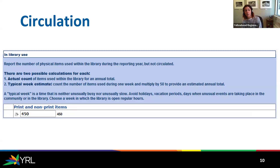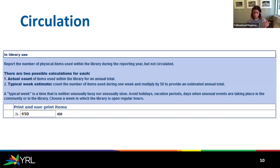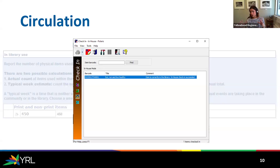Moving along, we have in-library use — that's in-house use. There are two ways of reporting this: an actual count or a typical week estimate. For the week estimate, you would have taken a week throughout the year where you gathered up the items and tallied them up. If you're wondering whether you do an actual count — this is the check-in workform selected on the in-house mode. So if there is a procedure at your library where things left out are gathered, taken to the desk to be scanned in on the in-house mode, then you will have these stats.